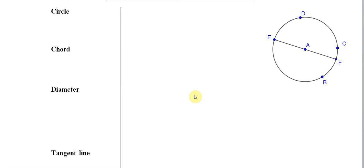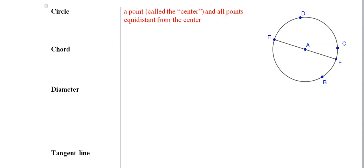The first definition is a circle. I think everyone has an intuitive understanding of what a circle is, but let's try to articulate it using precise mathematical language. A circle is a point called the center, and all points that are equidistant from the center.